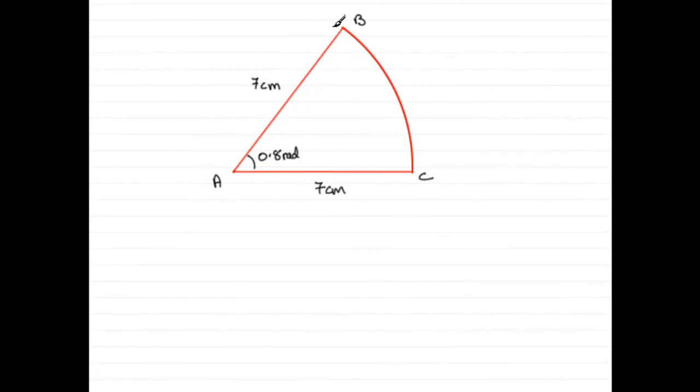What I've done is drawn the sector ABC that we're given. It has a radius of 7cm and the angle subtended at the centre is 0.8 radians. In the first question we're asked to find the length of the arc BC.